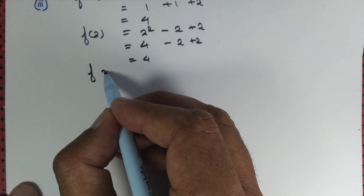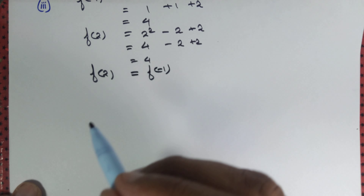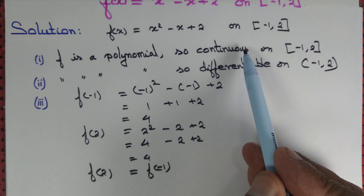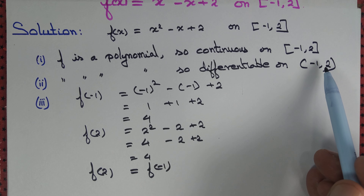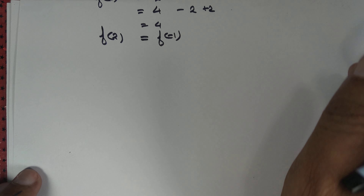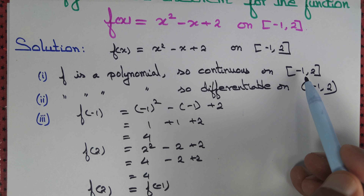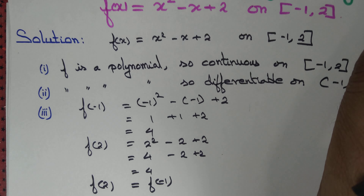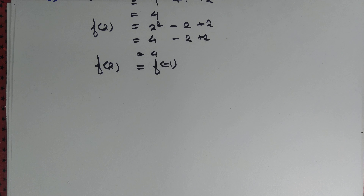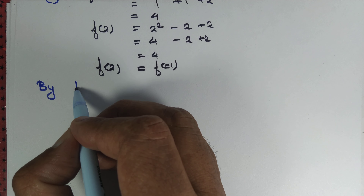So all three criteria are satisfied: f is continuous on the closed interval, f is differentiable on the open interval, and the values at the endpoints are equal — f(2) = f(-1) = 4. The endpoints are -1 and 2, so Rolle's theorem is applicable.